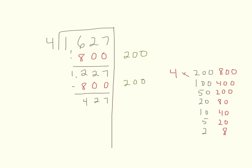Coming back to the chart, 800 is now too big, so I'm done using that one. My next number is 400, so I write 400 as my multiple on the left side and 100 as my partial quotient on the right side. Then I subtract, and now I have 27 left to divide.